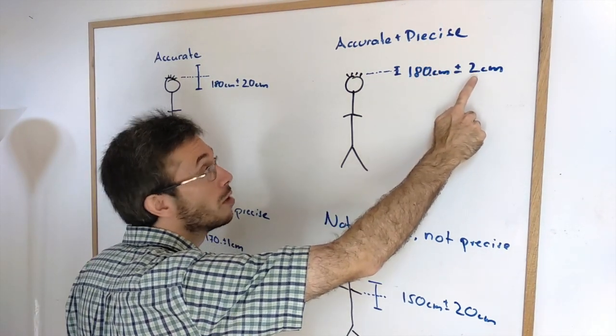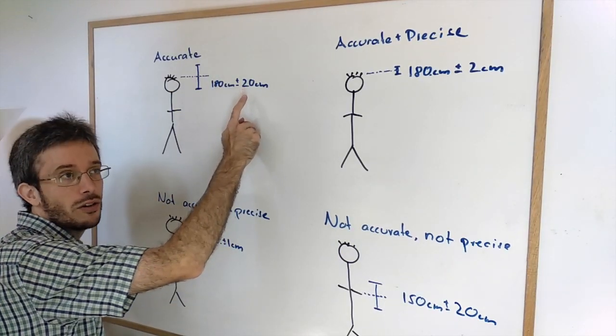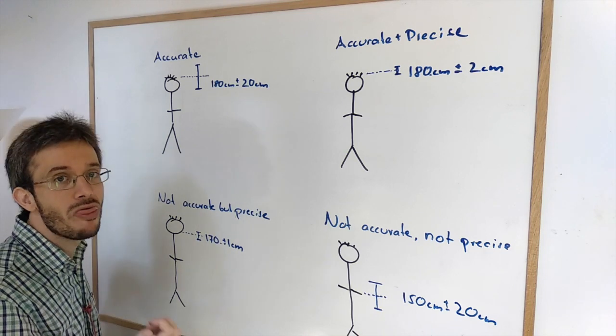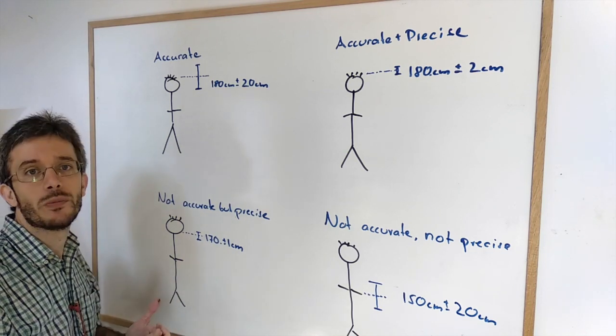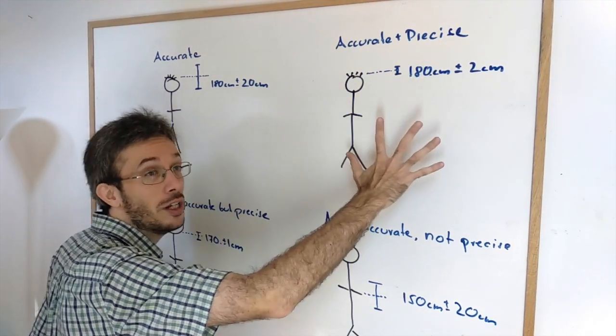So high precision means low uncertainty while low precision means high uncertainty. Accuracy by itself means is the real value in there. So of course the goal of any measurement is to be accurate and precise but often this is difficult to achieve.